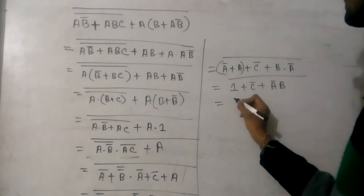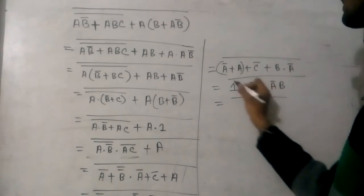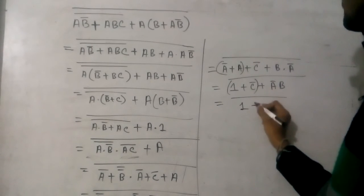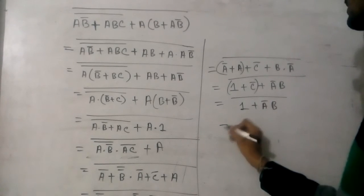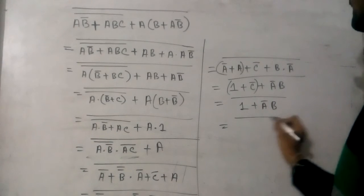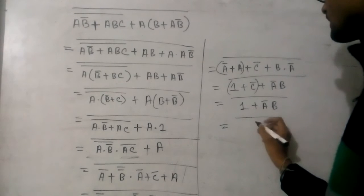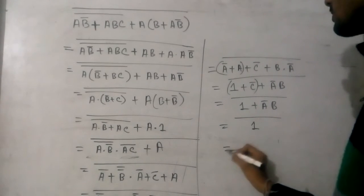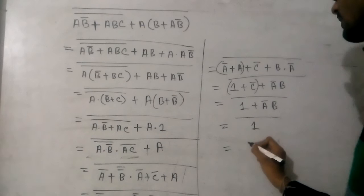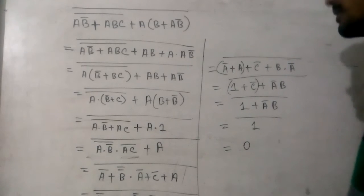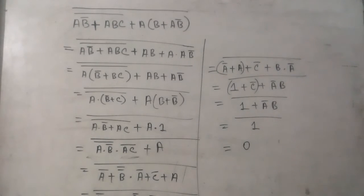And now I can write one plus C̄ is one, plus Ā·B. And again one plus this value is one, and I got a complement above one, so the value will be zero. Could you please repeat that on the last section?